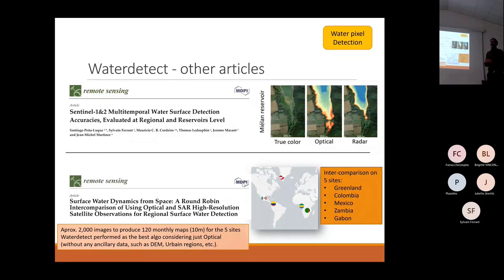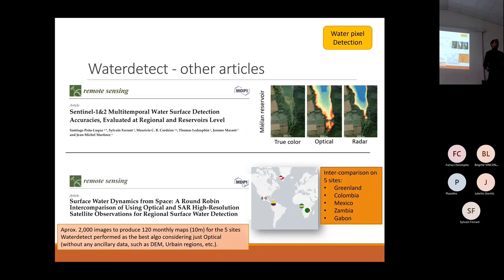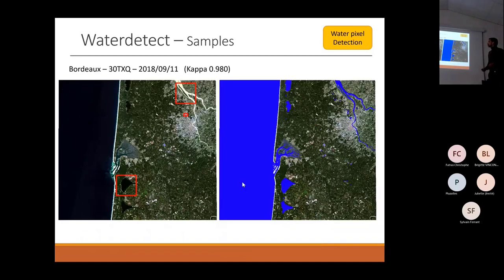Another advantage is that we don't use any ancillary data, such as DEM or urban regions, that other optical methodologies use to improve their accuracy. This is a scene in Bordeaux where we achieved a Kappa of 0.98 for the whole scene.